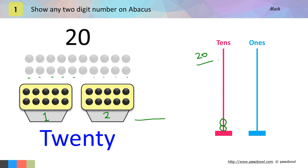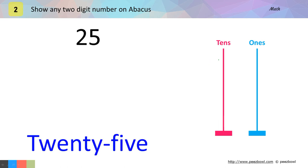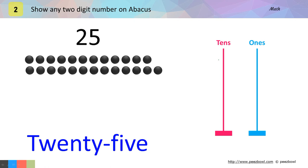I will take one last example and after that I will tell you a trick to show any 2-digit number on the Abacus. I will take number 25. I am sure you can solve this. We have 25 balls for this number.